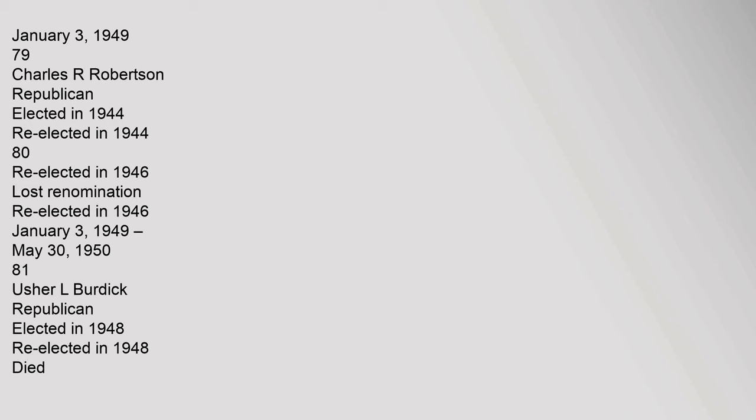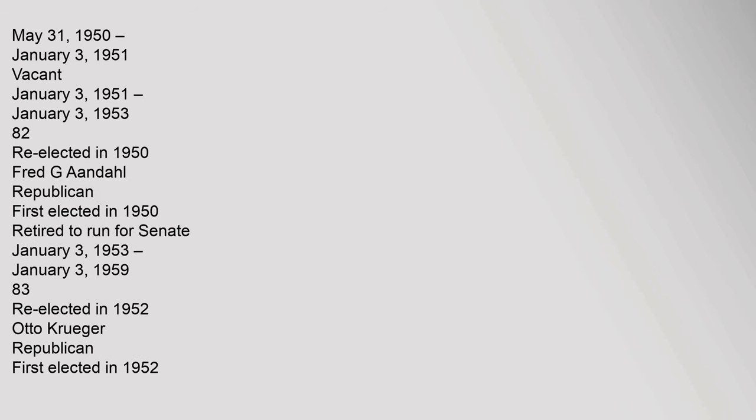From January 3, 1949 to May 30, 1950 (81st Congress): Usher L. Burdick, Republican, elected in 1948, died May 31, 1950. From May 31, 1950 to January 3, 1951: Vacant. From January 3, 1951 to January 3, 1953 (82nd Congress): re-elected in 1950; Fred G. Aandahl, Republican, first elected in 1950, retired to run for Senate.